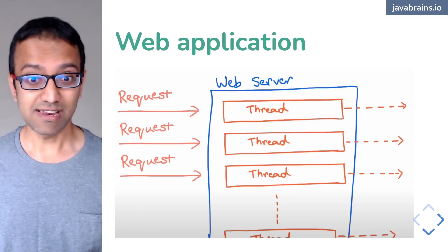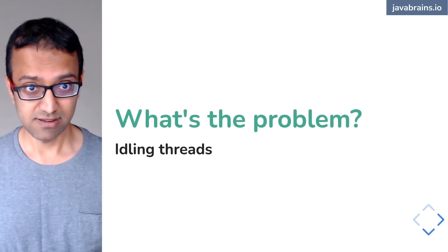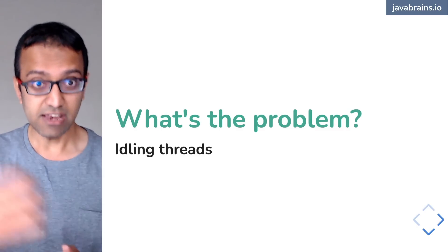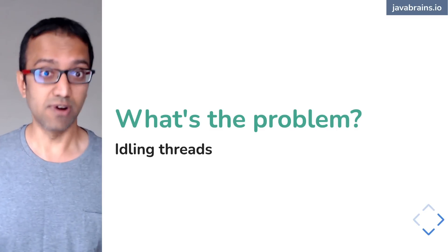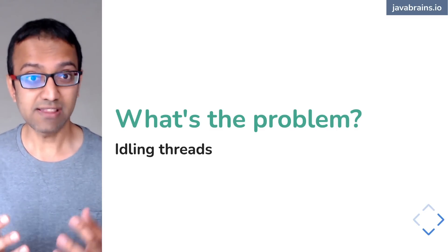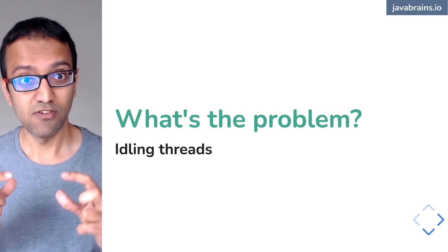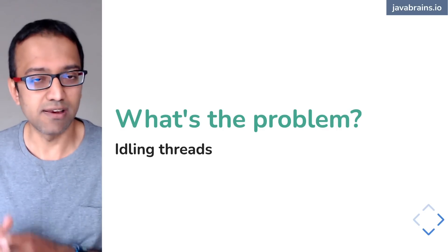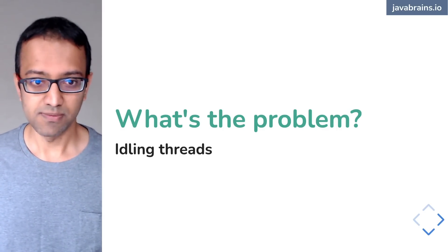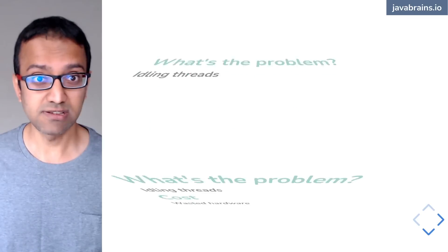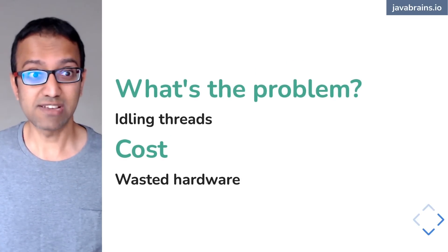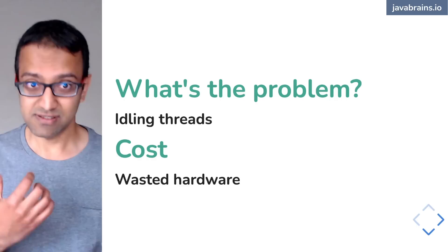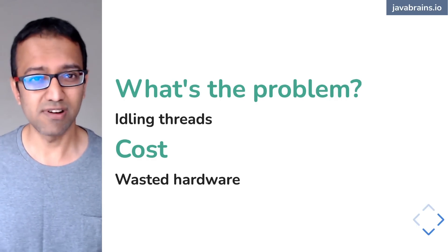The problem is idling threads. When calling get user, the thread just waits for it to complete. If both calls had been done in parallel, the thread wouldn't have idled on the server for that period — it could have handled another request. The result is wasted hardware. We end up having to scale horizontally or vertically because we're in this blocking mode, and that extra hardware cost is the consequence.